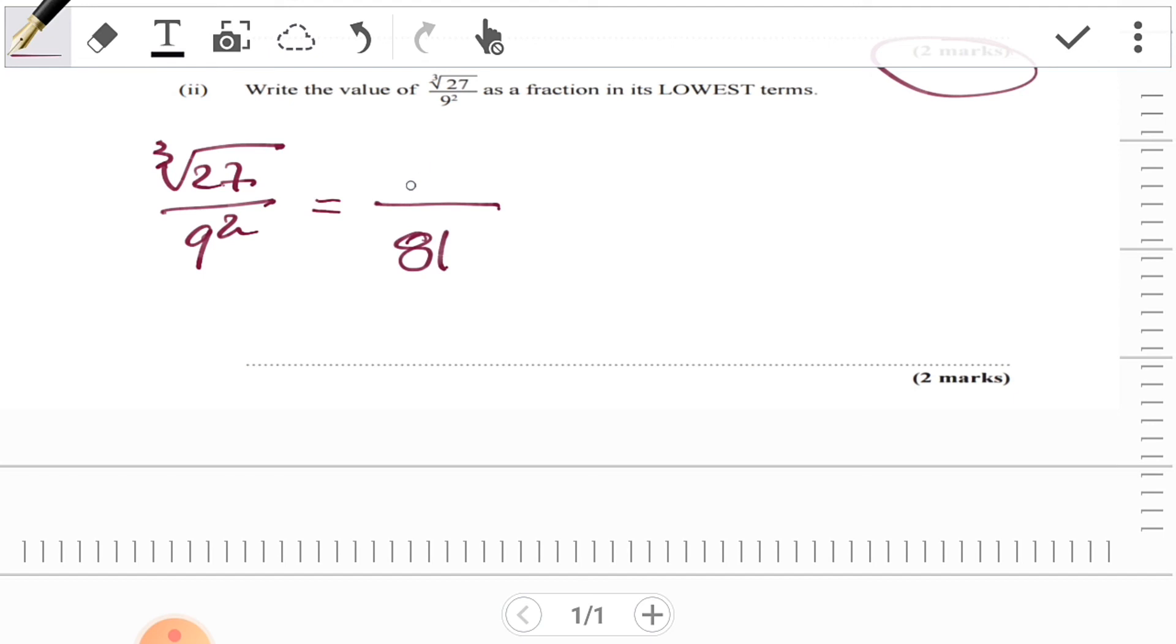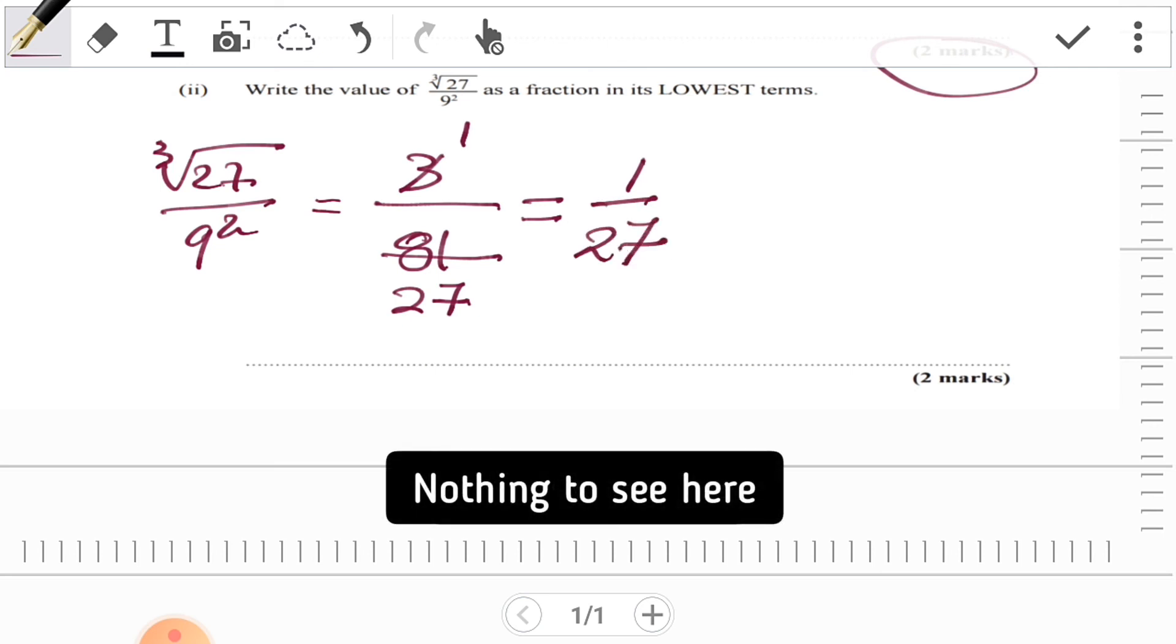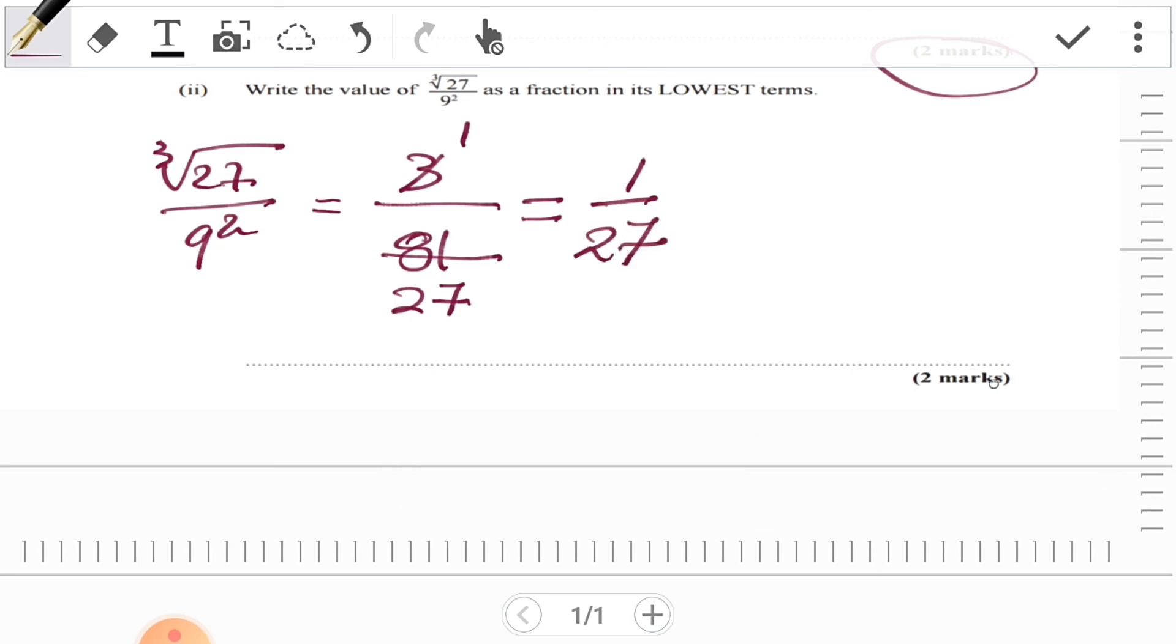You could use a calculator and get 3. Then you could cancel down by 3: 3 divided by itself is 1, and 3 into 81 is 27. So in its lowest form, it's 1/27. You could have collected another two marks easily here.